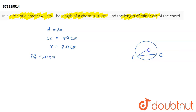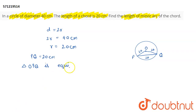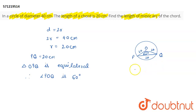Since the radius is 20 cm, we have OP = OQ = PQ = 20 cm. Since all sides of triangle OPQ are equal, it is an equilateral triangle. Within an equilateral triangle, every angle is 60 degrees. Therefore, angle POQ — the angle subtended by the chord at the center of the circle — is 60 degrees.